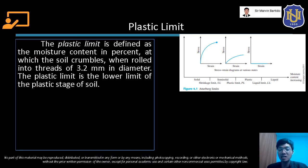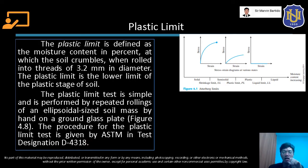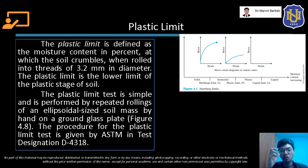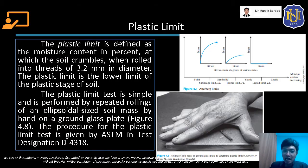Yung pag-conduct natin ng plastic limit test is simple, and pinaperform natin yan according sa procedure given by ASTM in test designation D-4318. Yung soil sample na gagamitin natin dito is yung nag-pass through sa sieve number 40, and yung opening nun ay 0.425 mm. What we do is nilalagyan natin yun ng konting amount of water and then we mold that into an ellipsoidal size soil mass — para siyang elongated soil pat. And then we are going to roll that on a ground glass plate.